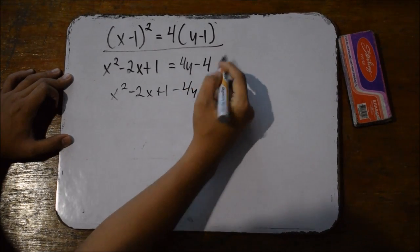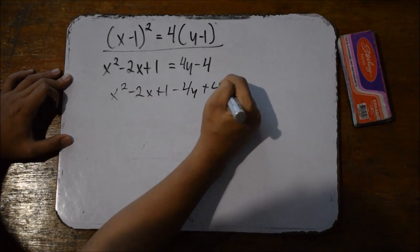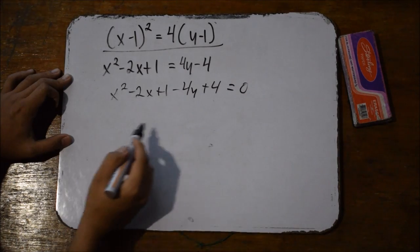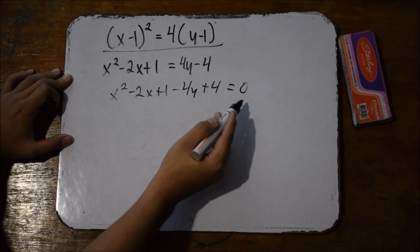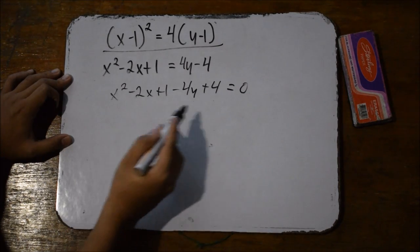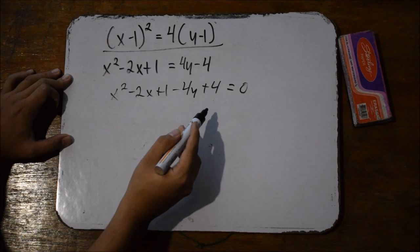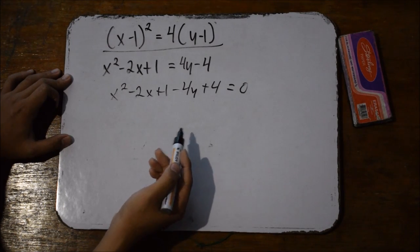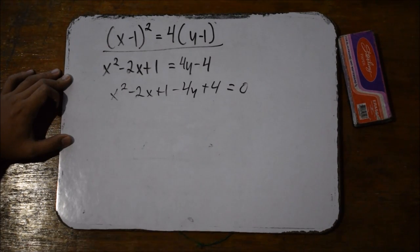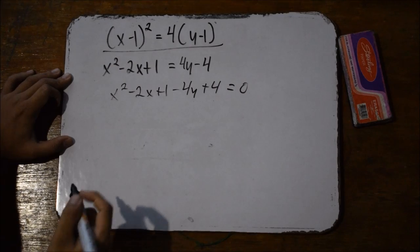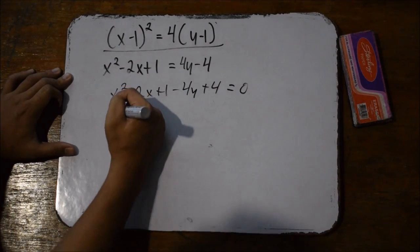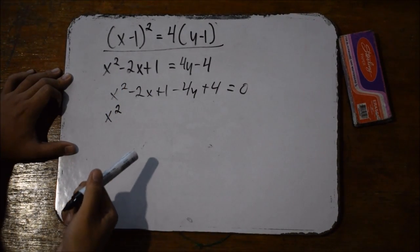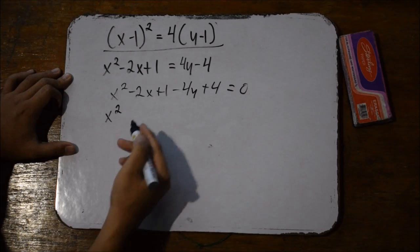So minus 4y plus 4 is equal to 0. But this isn't enough — we need to properly arrange the equation, add similar terms, and arrange them properly from the highest degree to the lowest.